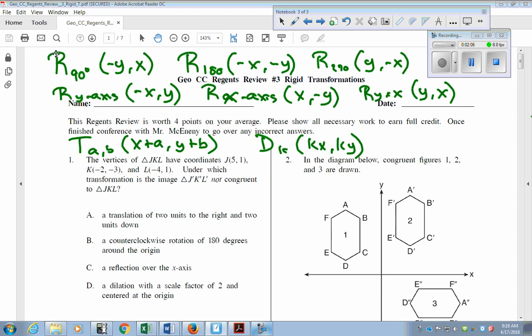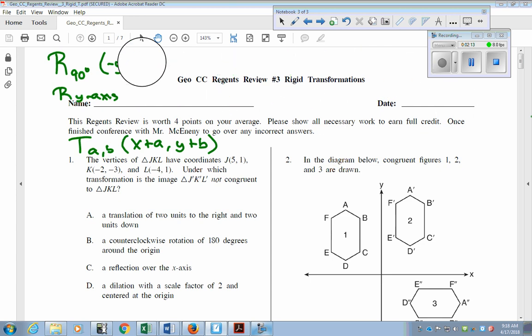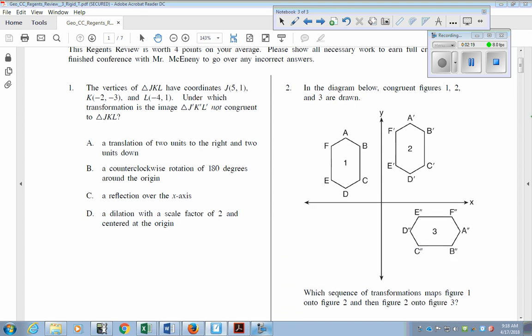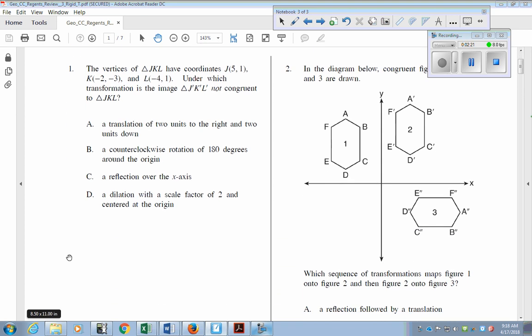We're going to look at a couple questions. I'm going to erase these, but feel free to pause it and write them down. So we're going to look right at number one. And this one asks which transformation is the image of the triangle not congruent.